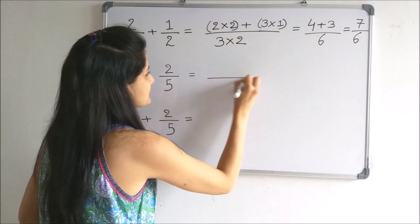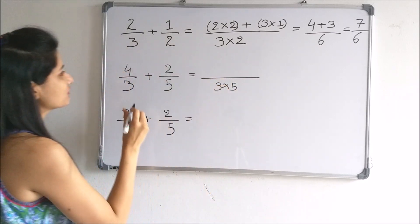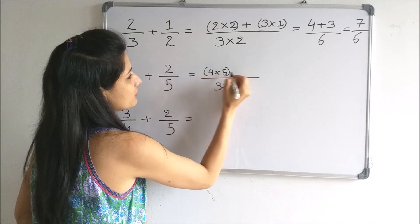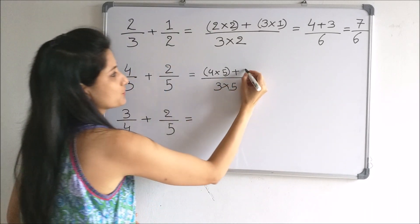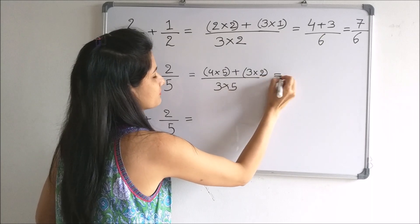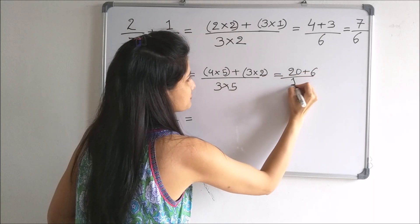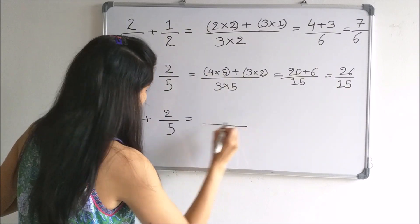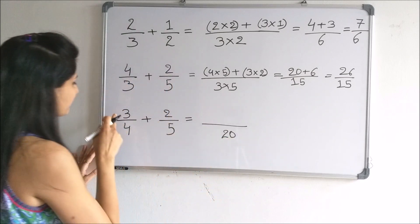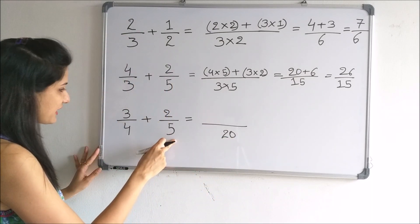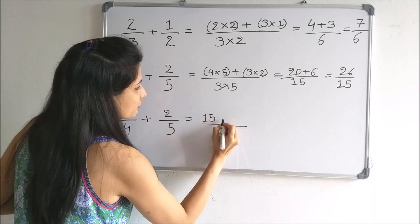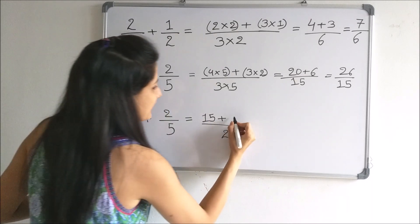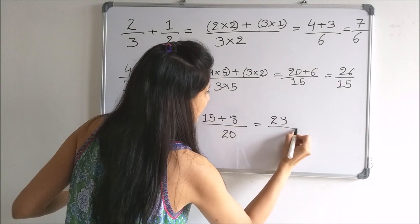Here also, we multiply the two denominators and do the cross multiplication of the numerators and denominators. We multiply 4 and 5, then add it with the product of 3 and 2, giving us 20 plus 6 divided by 15, which is 26 by 15. In this example also, we multiply the denominators to get 20. Then we multiply the numerator of the first fraction with the denominator of the second: 3 times 5 is 15. We add it with the denominator of the first times the numerator of the second: 4 times 2 is 8, giving us 23 by 20.